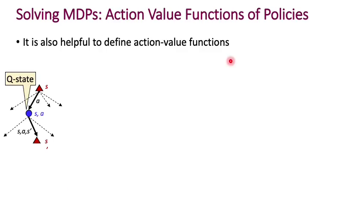Now that we've seen state value functions of policies, let's talk about action value functions of policies. Action value functions are the same thing, except now we assume we're not just at a current state — we've also executed a particular action from it. We now compute the expected value of future rewards after having executed that action, conditioned on both being in a state and performing a particular action from that state.